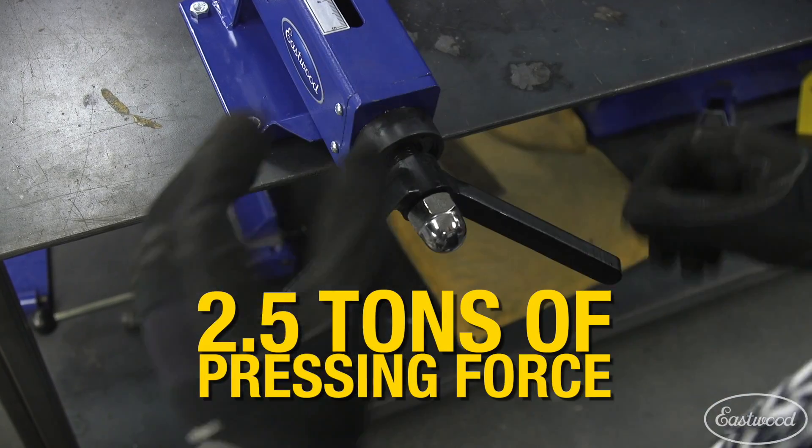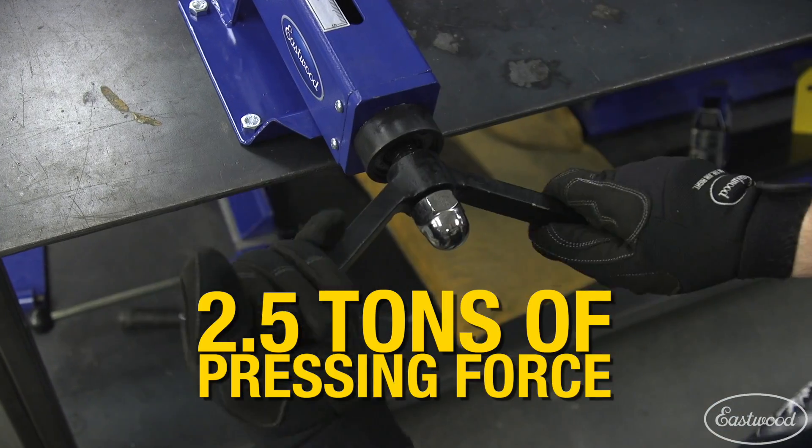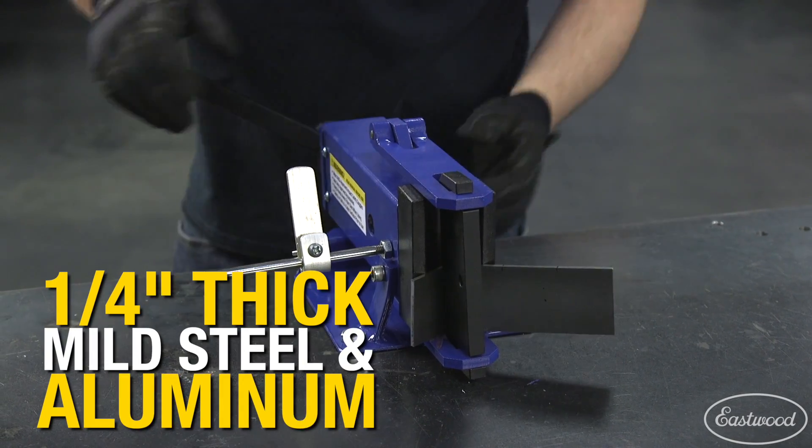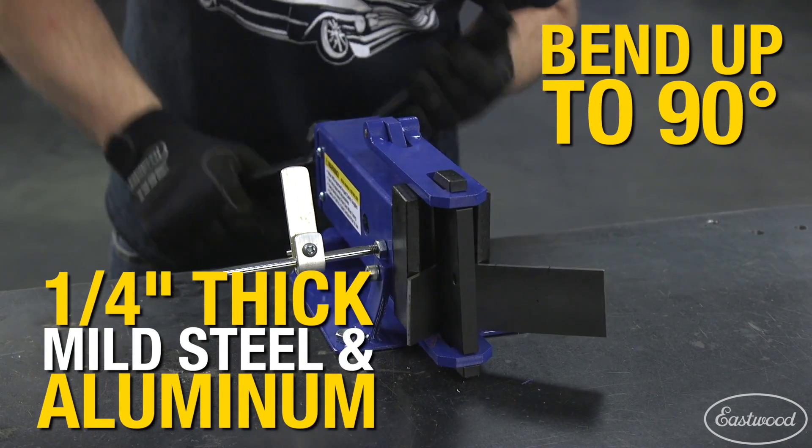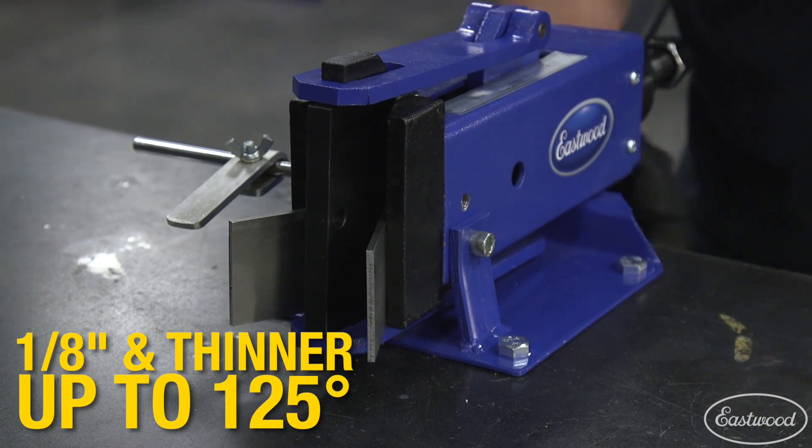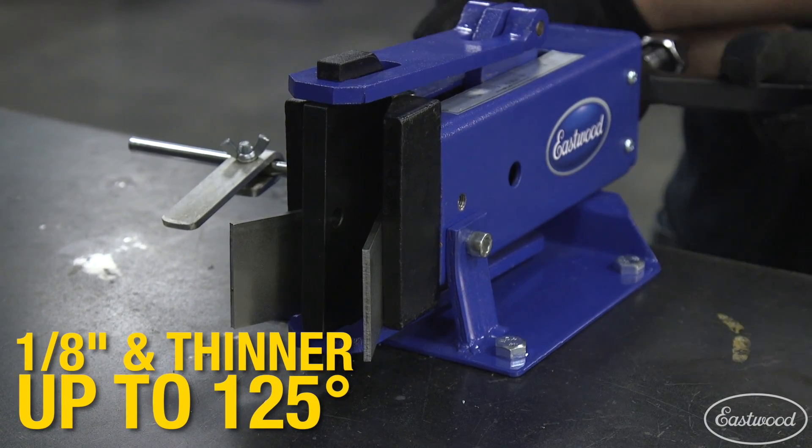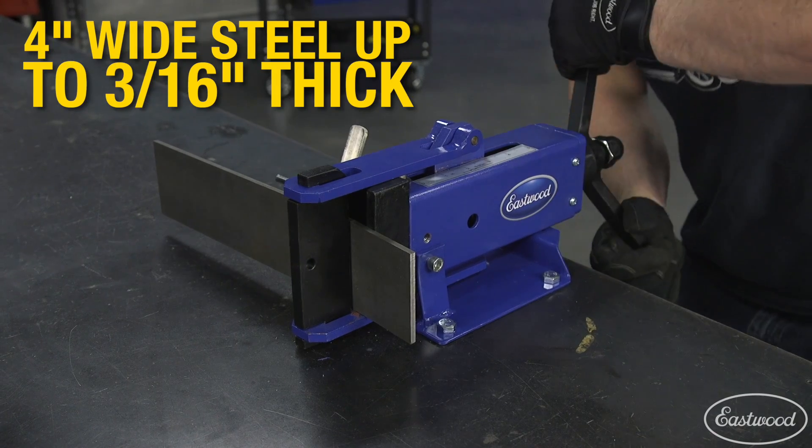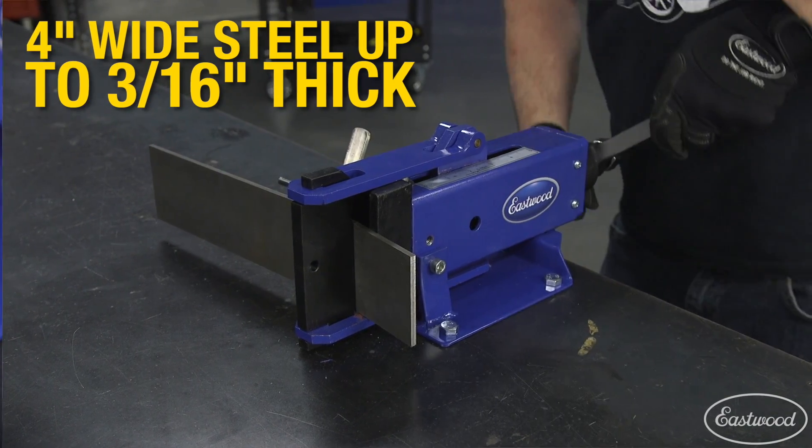The powerful 2-1/2 tons of pressing force will bend 1/4 inch thick metal up to a 90 degree angle and will bend 1/8 inch and thinner all the way up to 125 degrees. It will bend 4-inch wide steel that is 3/16 inch thick.